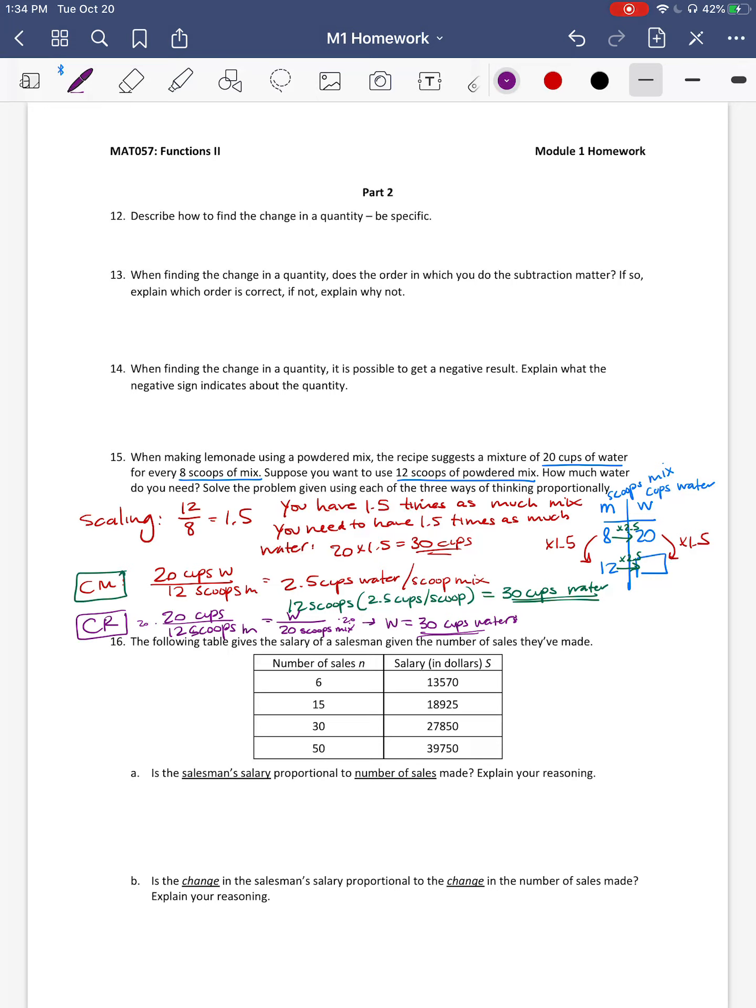Number 16 says the following table gives the salary of a salesman given the number of sales they've made. So is the salesman's salary proportional to the number of sales made? Essentially, we just need to pick one of those three ways of reasoning and show whether that way is true or false. Honestly, the easiest way to show proportionality is looking at the constant ratio. You can do it the other way, but the ratio really is going to be the most efficient use of our time. So if we wanted to know, we'd want to know is the ratio of salary to the number of sales always going to be the same. And so we'd set up like 13,570 over 6. Is that equal to 18,925 over 15? And I could set up all of this. 27,850 over 30 equal to 39,750 over 50. Because if the quantities are proportional, all of those fractions have to be equal.